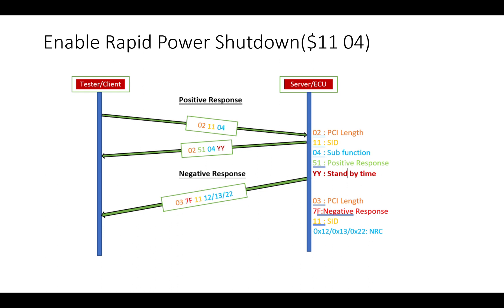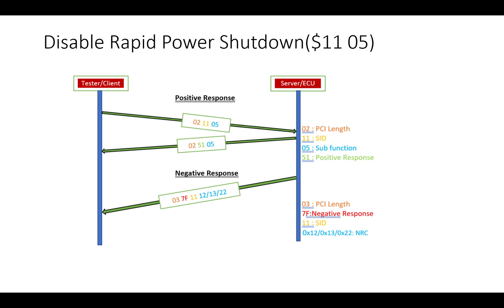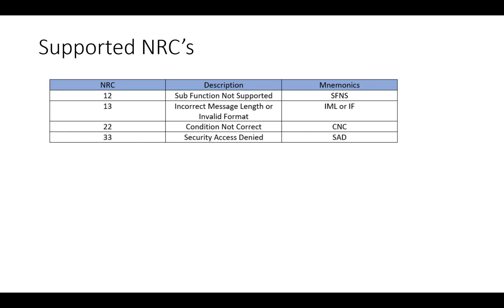Disable rapid power shutdown (0x1105) requests the server to disable the previously enabled rapid power shutdown function. The request is 0x1105; positive response is 0x02, 0x51, 0x05; negative response is 0x7F followed by 0x11 followed by the NRC. The NRCs supported by ECU reset service 11 are: 0x12 (sub-function not supported), 0x13 (incorrect message length or invalid format), 0x22 (conditions not correct), and 0x33 (security access denied). Thanks for watching — if you liked the video, please give it a thumbs up.